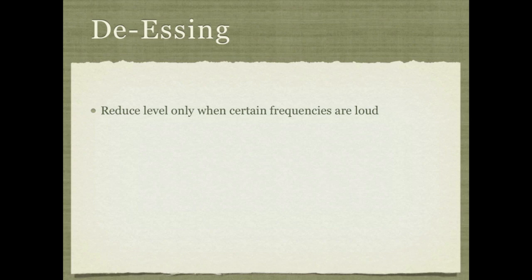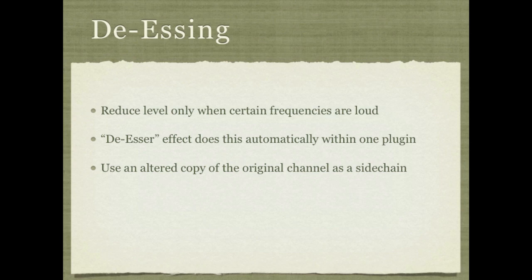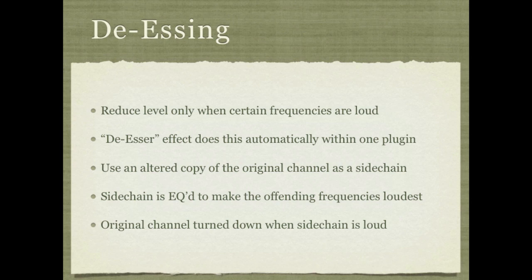Next is de-essing. De-essing reduces the level of a track only when certain frequencies get louder. Most of the time you'd use an actual de-esser, but for illustration we'll construct one out of a compressor, a sidechain, and an EQ. You take an altered copy of the original channel as the sidechain — the meter the robot's now-moved-over eyes are looking at — and EQ it so that the frequencies you want to reduce are now the loudest. Then the compressor on the original channel turns it down whenever the sidechain becomes loud.